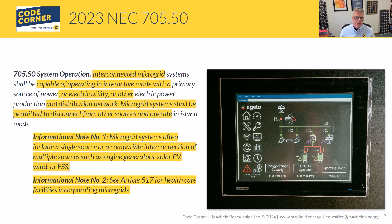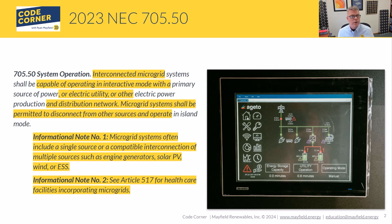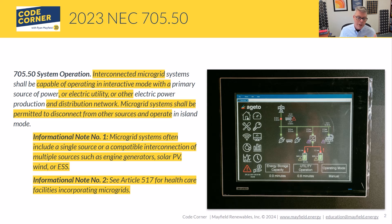There are informational notes discussing this — and remember, informational notes are not part of the code language, they're there purely as information. They note that microgrid systems often include a single source or compatible interconnection of multiple sources, giving examples such as generators, PV systems, wind, and ESS — all of these different components typically comprise the microgrid.